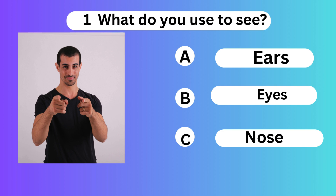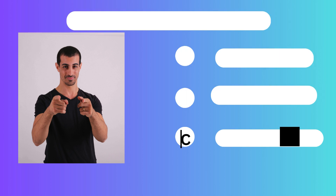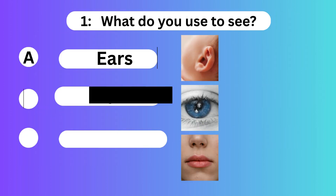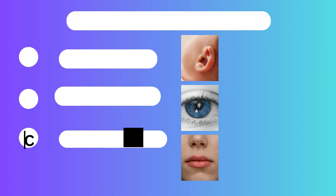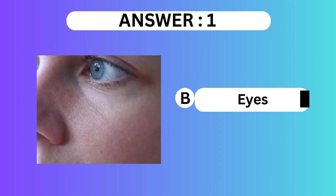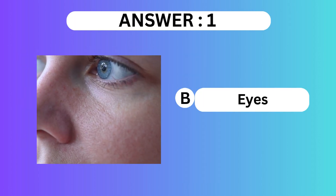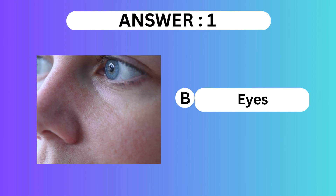Question 1. What do you use to see? A. Ears. B. Eyes. C. Nose. Answer is B. Eyes.